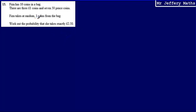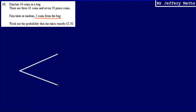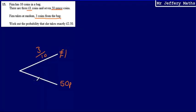We can think of these three coins from the bag as being three events. When dealing with more than one event in probability, a nice way to think about this is by drawing a tree diagram. There are two possible outcomes when she selects a coin: she can either choose a £1 coin or a 50p coin. The probability that she chooses a £1 coin is 3 tenths, and the probability that she chooses a 50p coin is 7 tenths.